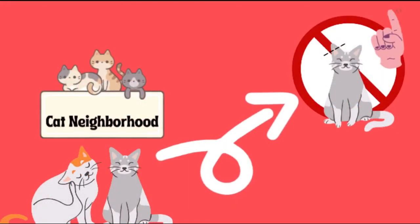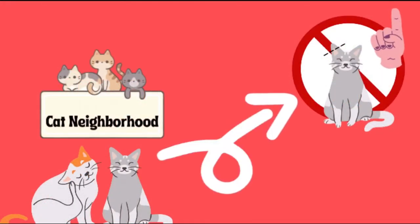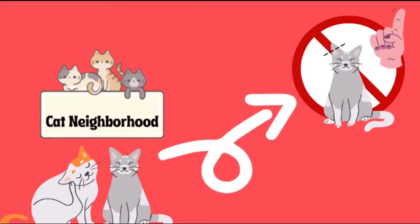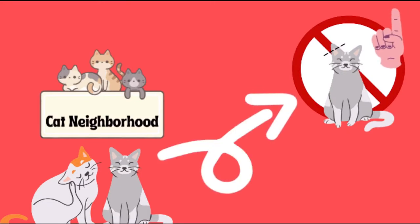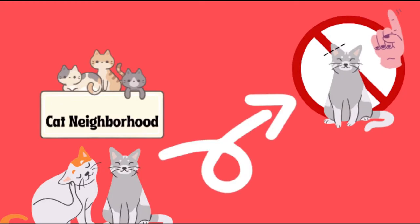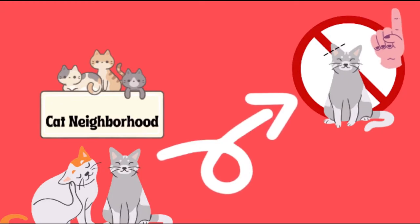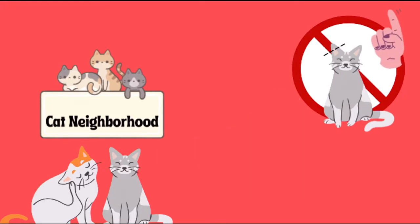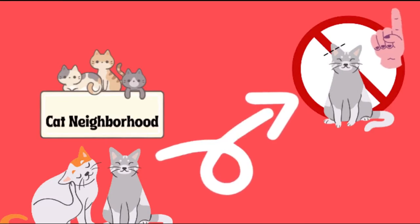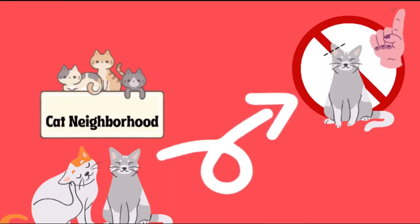The first step to a successful TNR run is locating an area with a possible population of cats. It's important to note that cats with an ear tip — a light cut on the ear — are already fixed and should not be trapped. Furthermore, cats with collars and/or tags may be pets, and it is important to contact the owner instead of trapping.